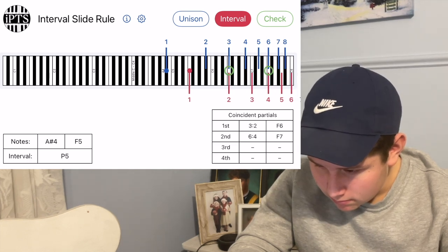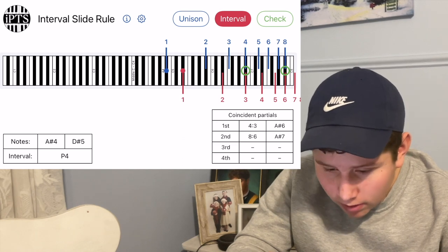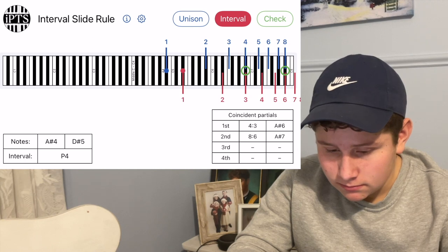Two. We'll go with two. Two is fine. Okay. So what are the two notes? A-sharp 4 and D-sharp 5. And what is that interval? P4. That's a perfect fourth. Good.